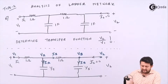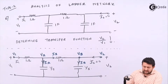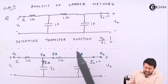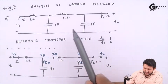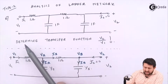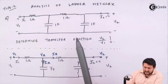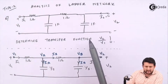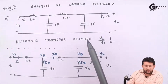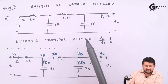Let's have a look at type 2. The topic we will be learning is analysis of a data network. The network is given to you, and I need to determine the transfer function V2 by V1. Let's look at the defined steps for solving this problem.